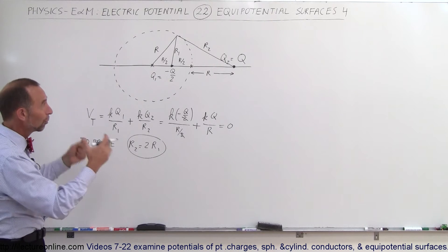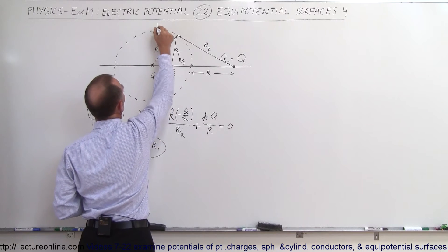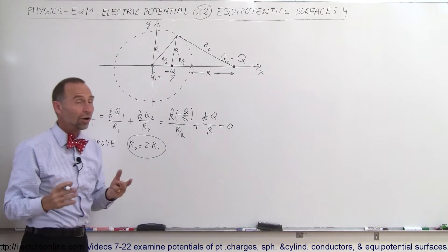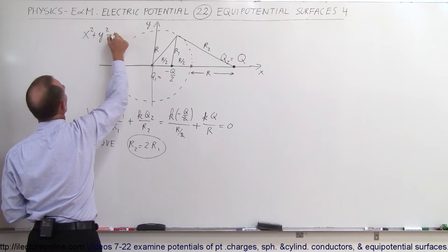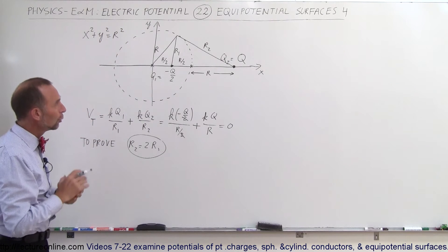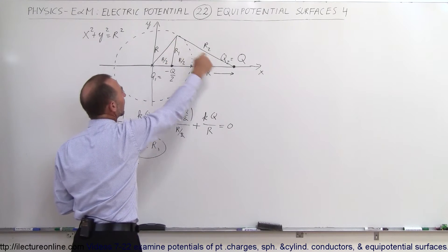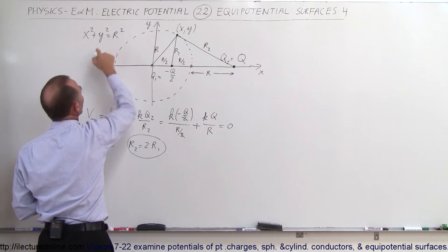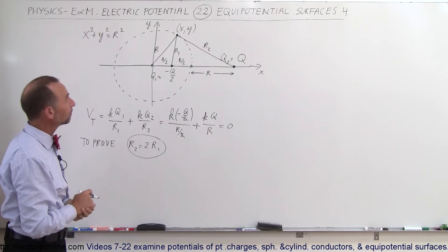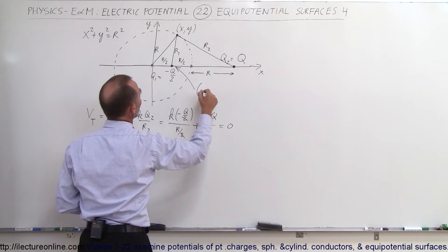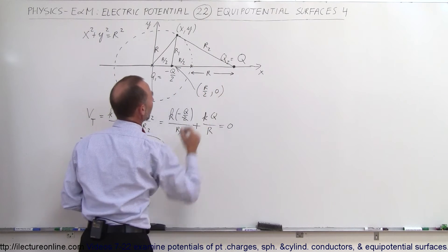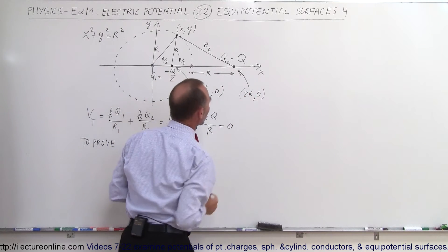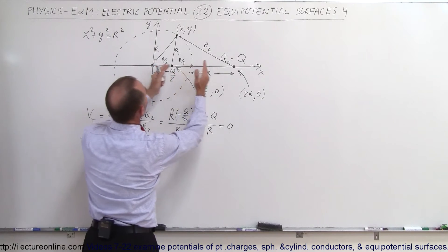To prove this, we place the circle at the origin with a y-axis and x-axis. The radius is R, so the circle equation is x² + y² = R². The charge -Q/2 is located at coordinates (R/2, 0) on the x-axis, and the charge Q is located at (2R, 0) — that's R from the center plus another R, giving 2R total.